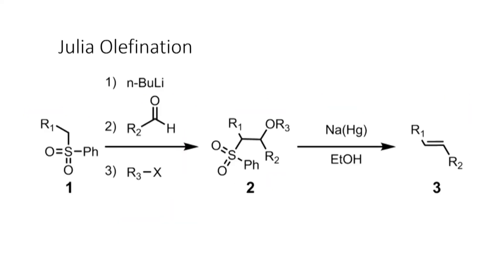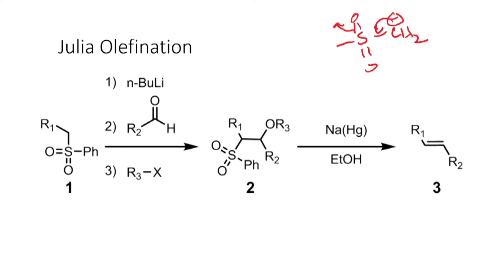Moving on to the next olefination reaction, this is called the Julia olefination reaction. We have looked at the two categories of active methylene compounds: the first was the nitro compound, where the alpha position to a nitro group is quite acidic. We also looked at cyano compounds, where cyano is quite electron-withdrawing and the alpha position to cyano is also quite acidic. The last compound we are going to look at is the sulfone. The sulfone is also fairly electron-withdrawing, and you can imagine the delocalization; therefore the alpha position to a sulfone is also quite acidic.